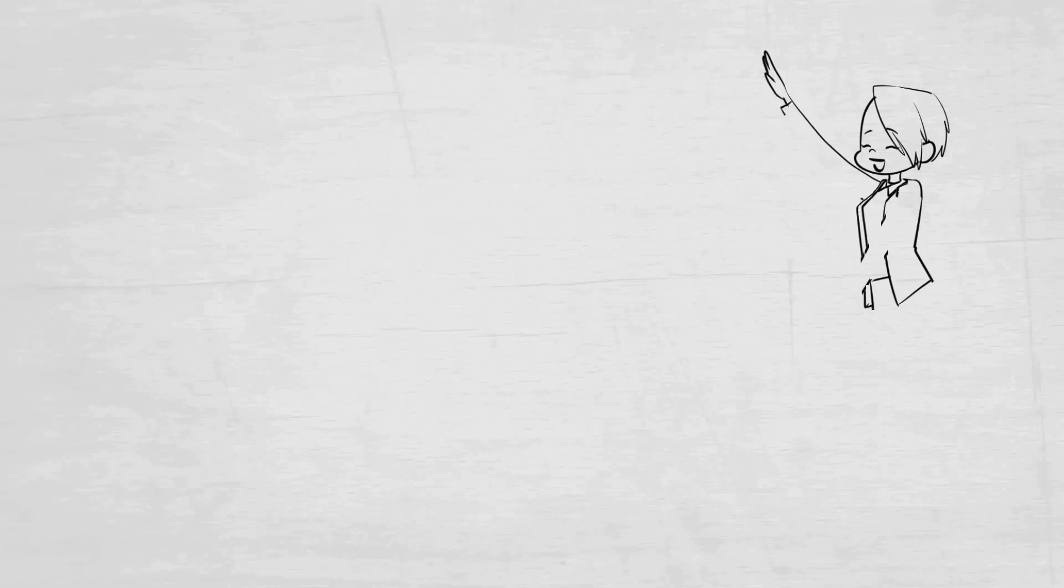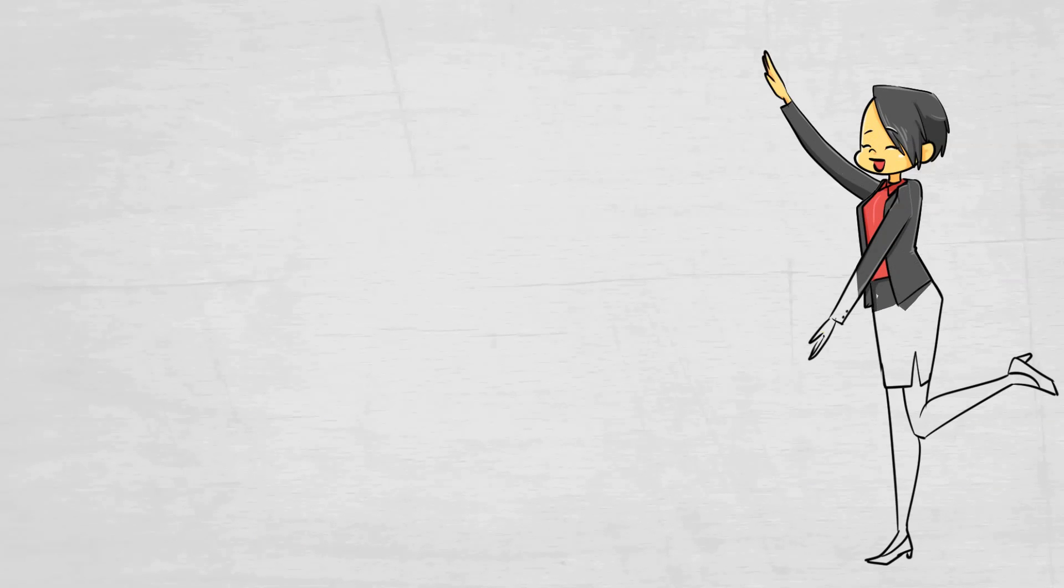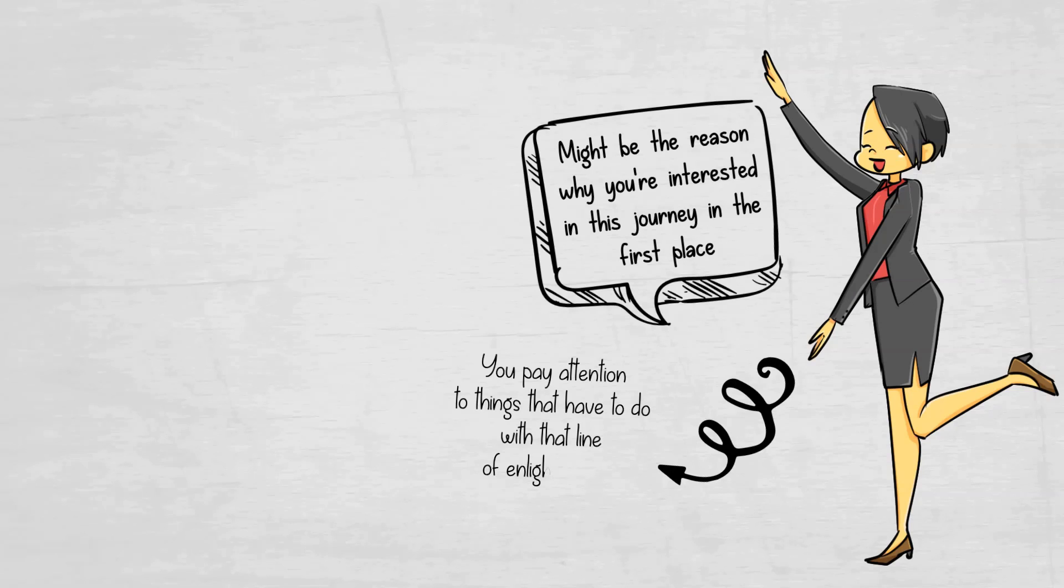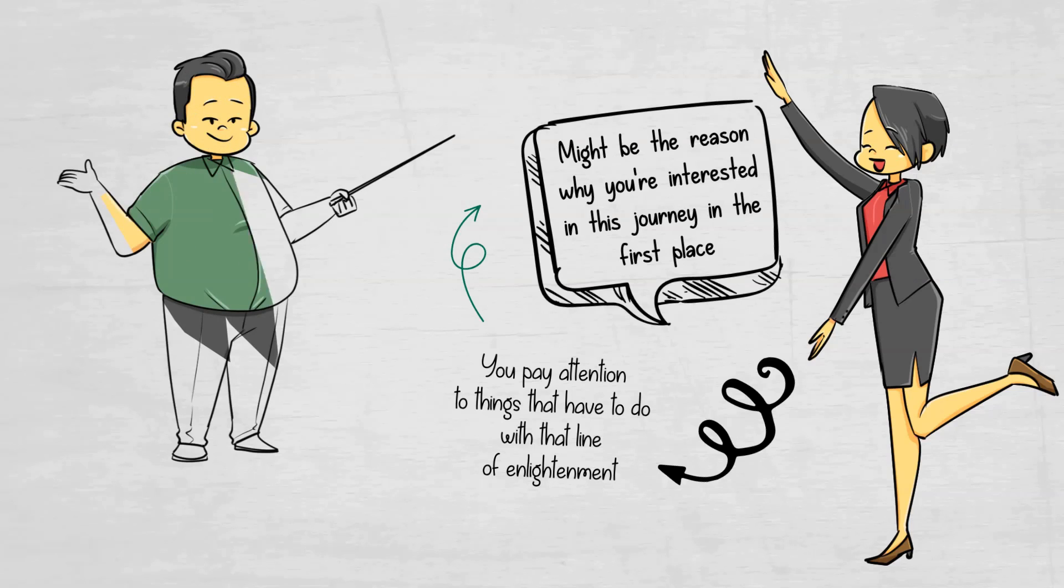Three: pay attention to practices that excite you. While you're about to embark on your spiritual journey, certain things might excite you about the journey. Some of these things might be the reason why you're interested in this journey in the first place, so you have to note them and make sure that you pay attention to things that have to do with that line of enlightenment. These things could be philosophies, tools, or practices. A spiritual journey is not supposed to be dull or dry, and this is possible if the practices of your path are things that excite you.